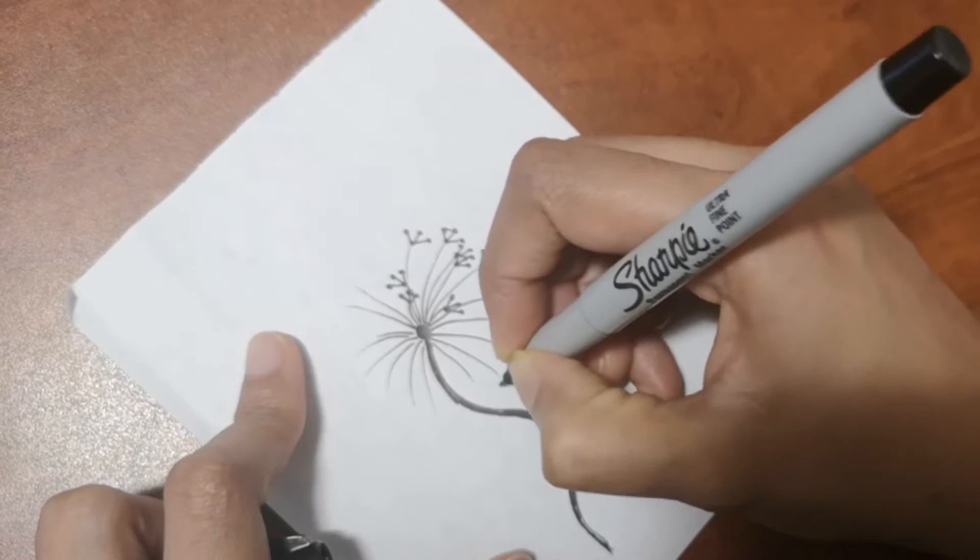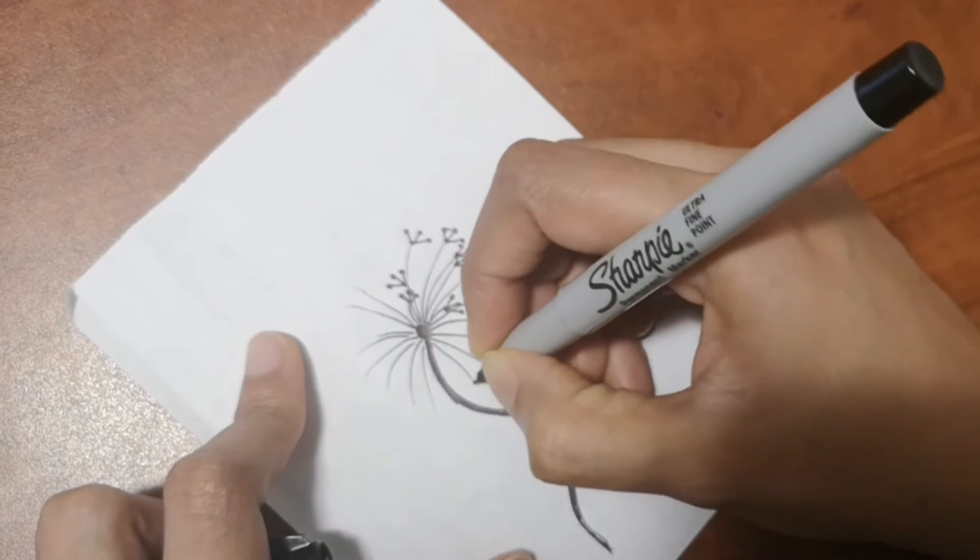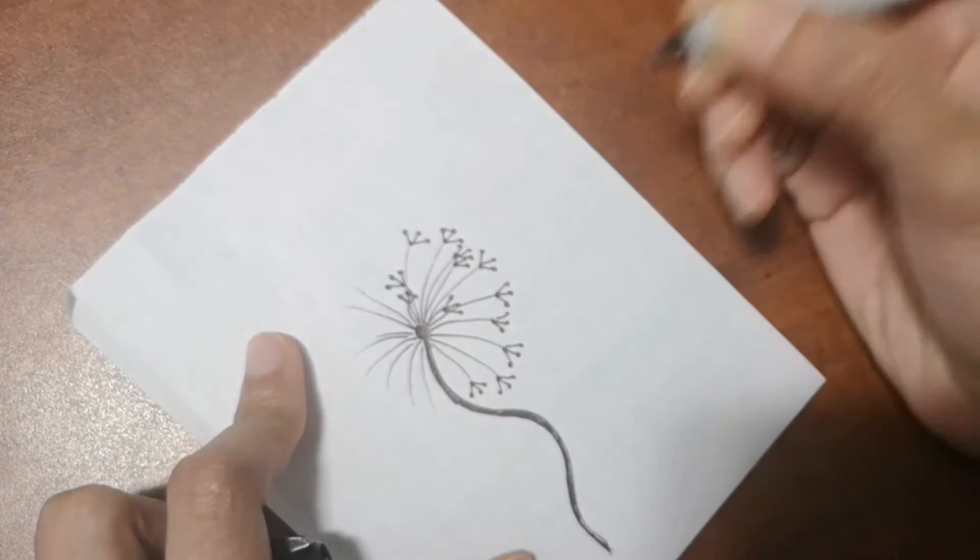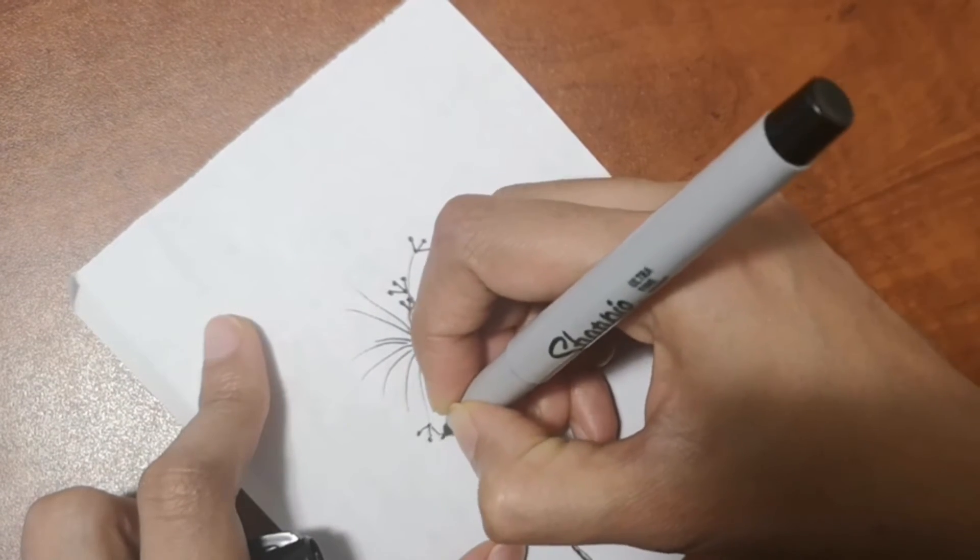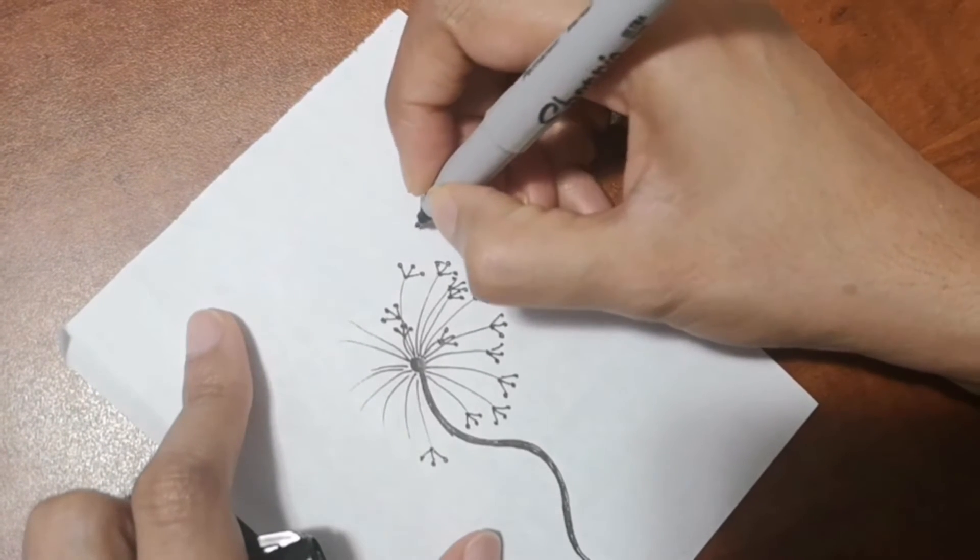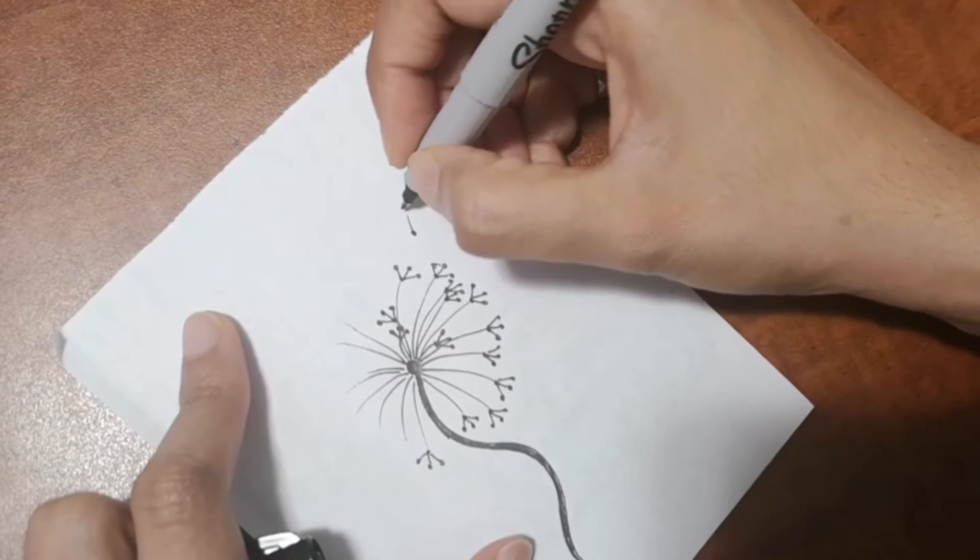Then we'll draw some dandelion parts that are flying away as well. To color it, I'm just going to use a little bit of blue and green. Not much coloring—it's just going to be black and white for this drawing. If you like high quality art supplies, check out the link below.